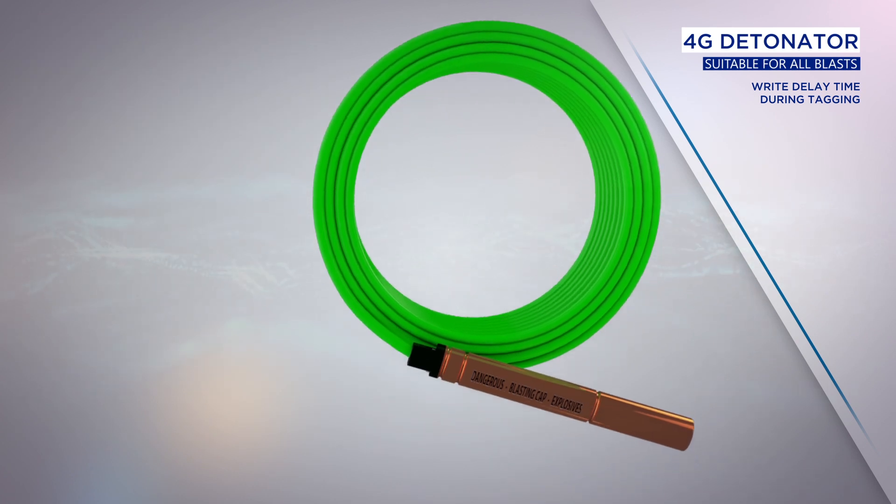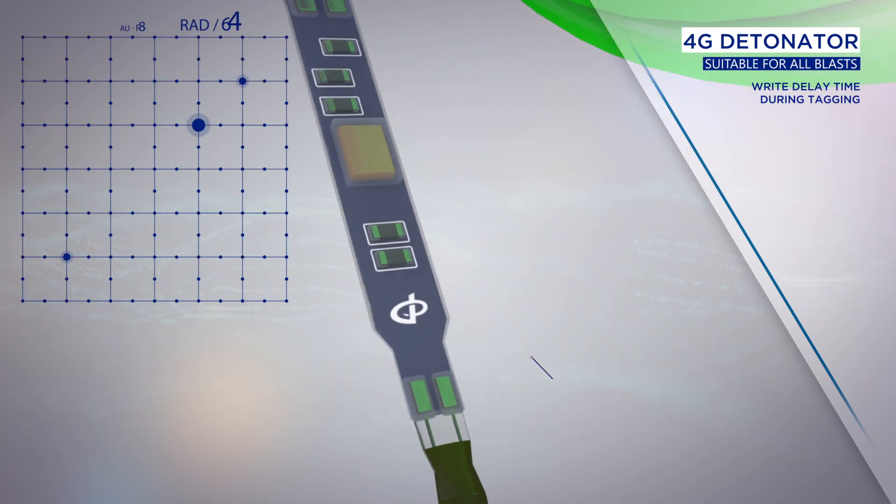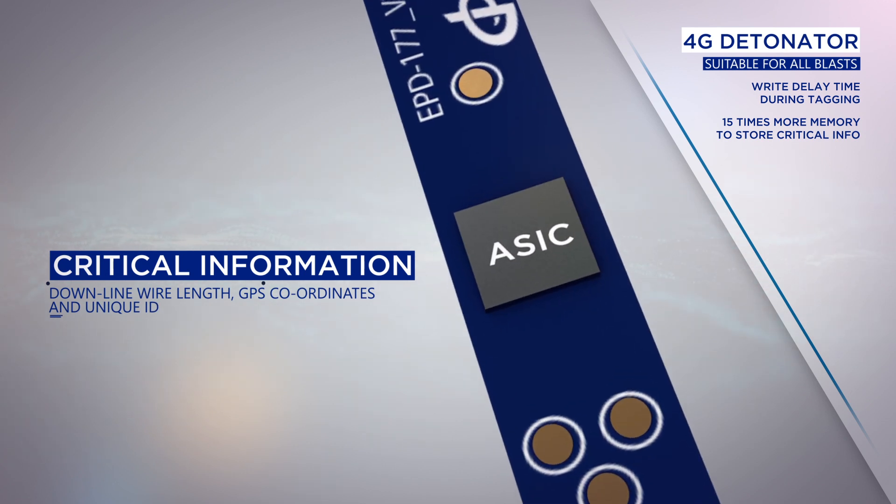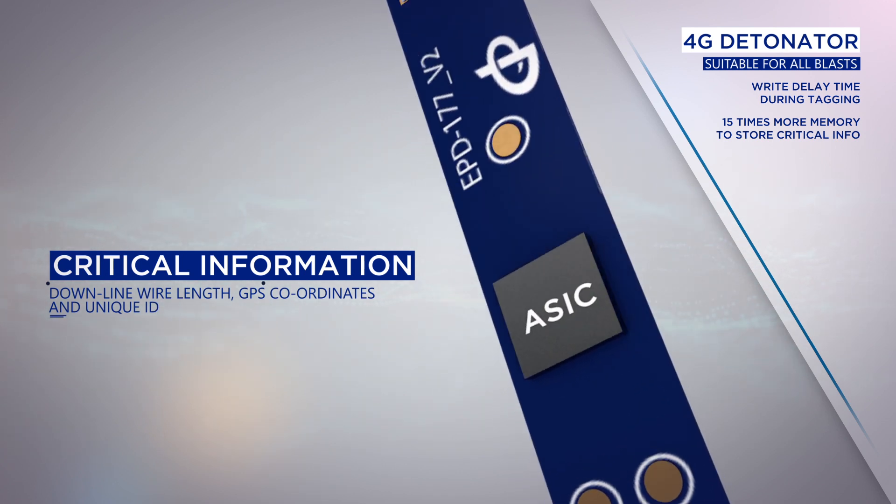And with the newly designed application-specific integrated circuit, ASIC, 15 times more memory is now available to add critical information such as the downline wire length, the GPS coordinates, and the unique ID.